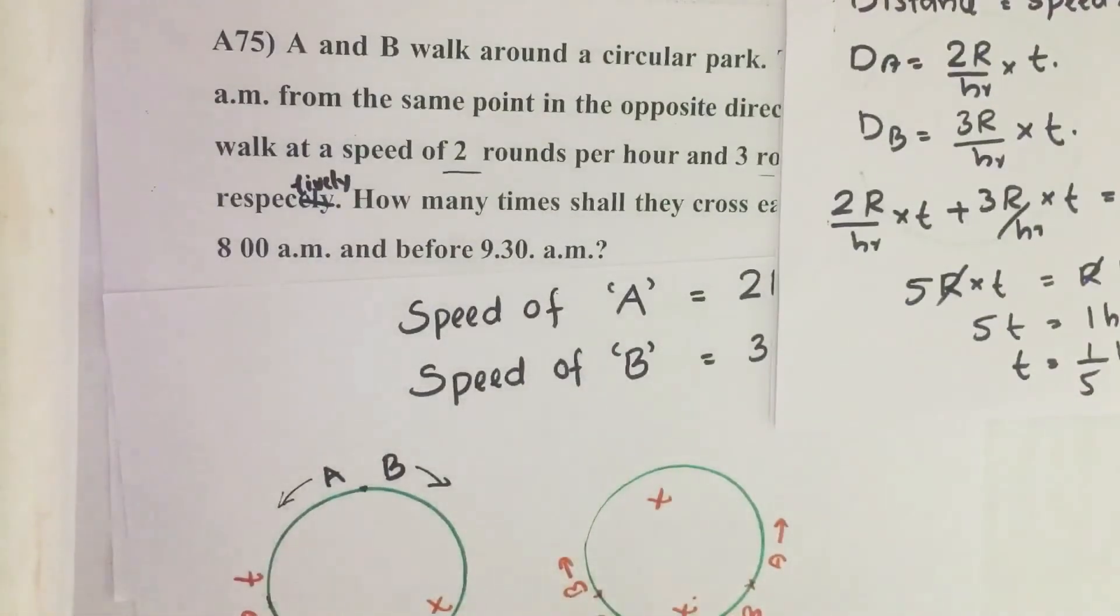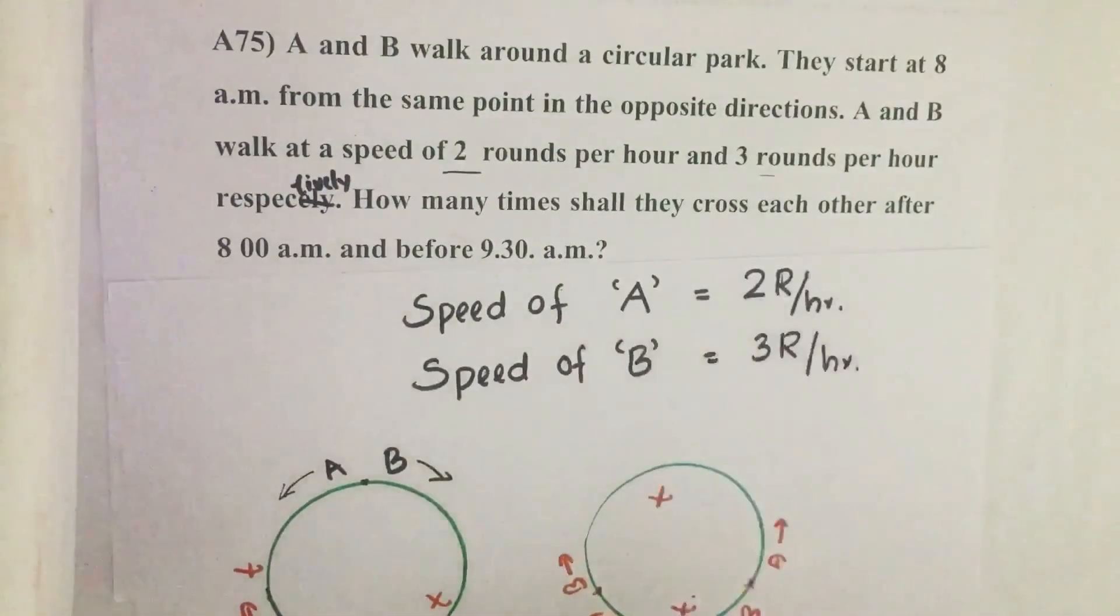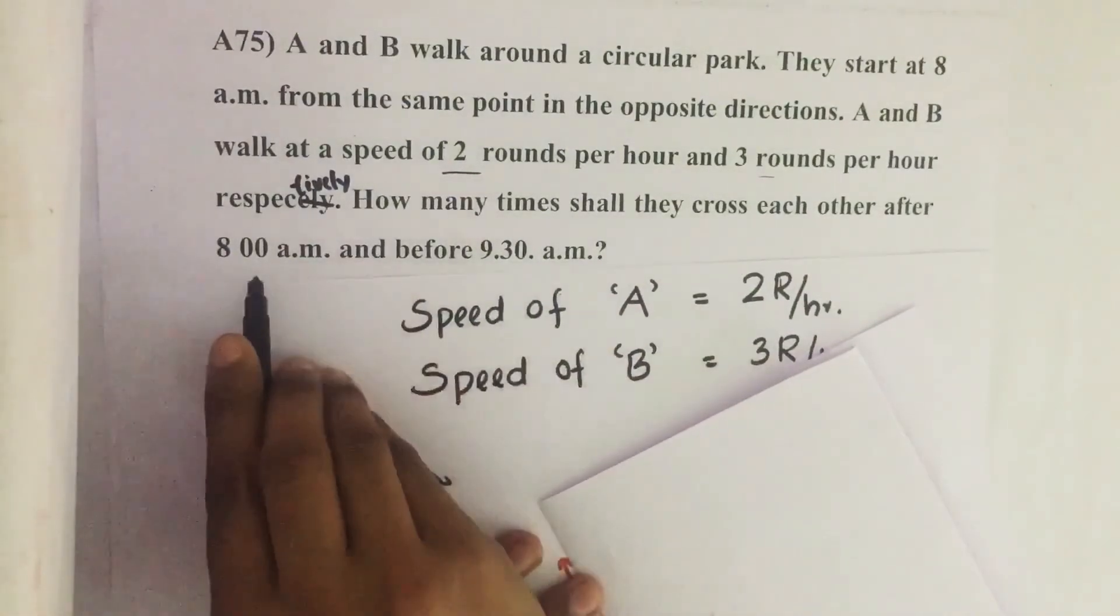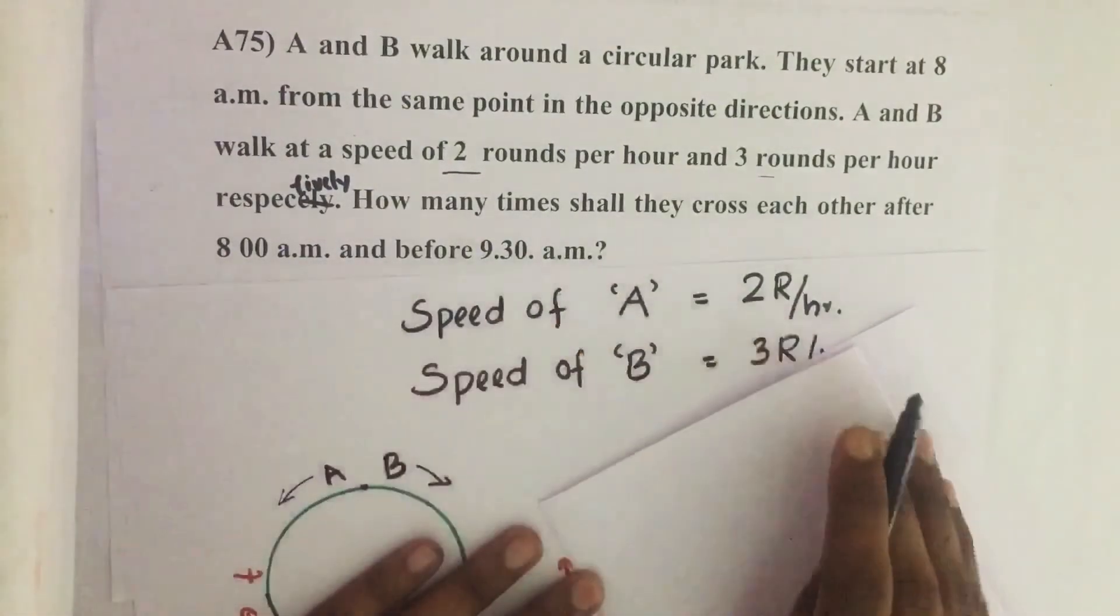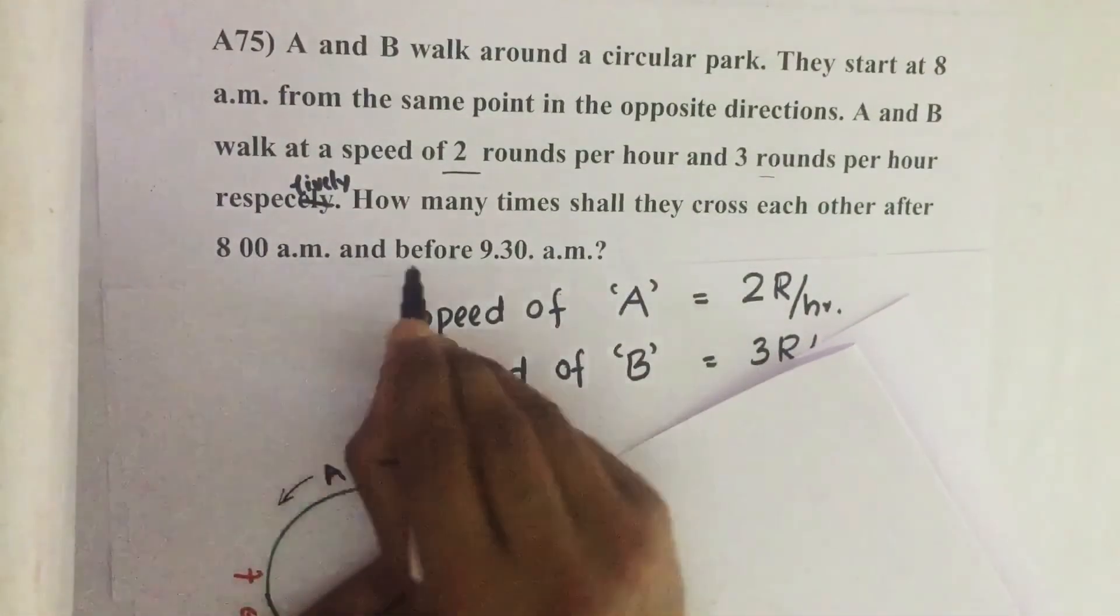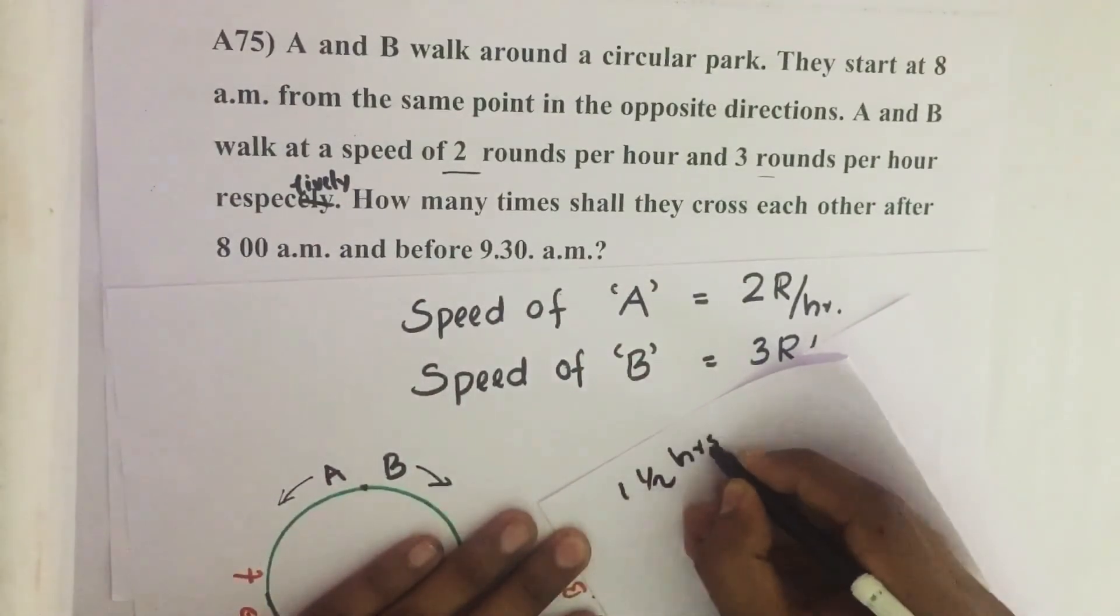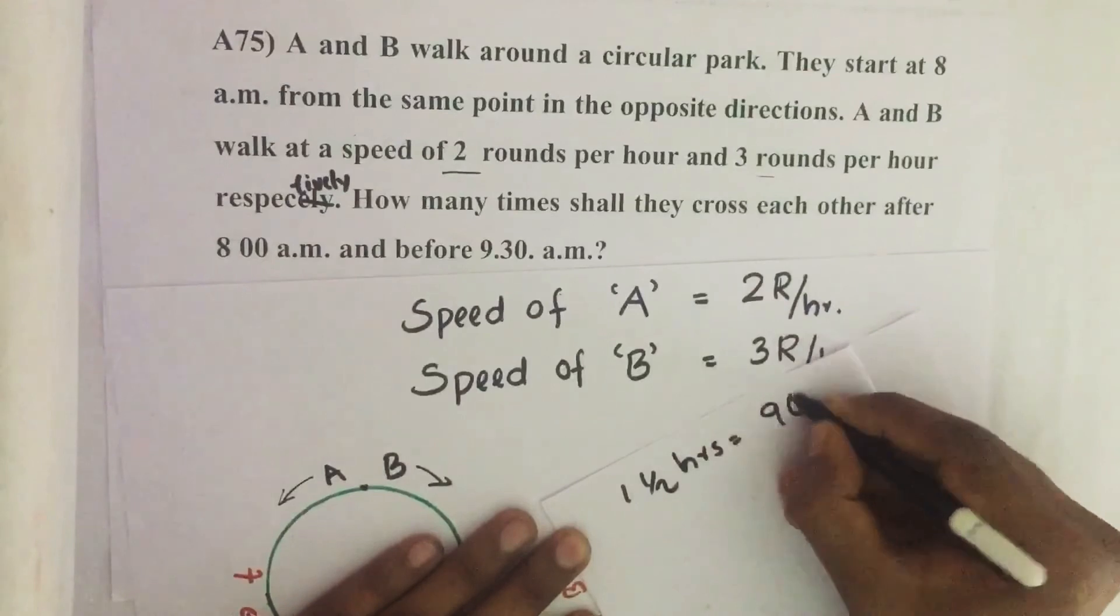That many times A and B will meet. So to find that, time interval between 8am and 9:30am equals 1 and a half hours. That is equal to 90 minutes.